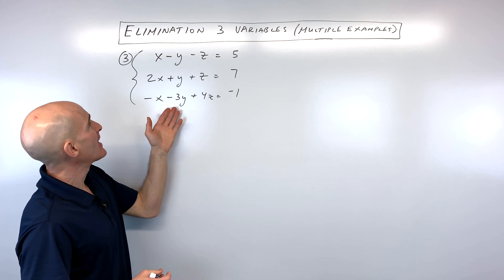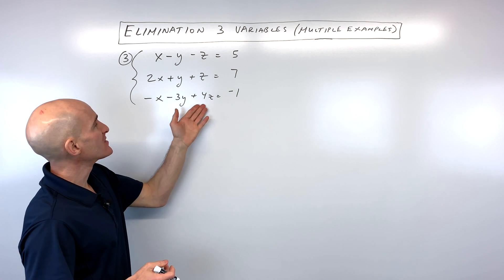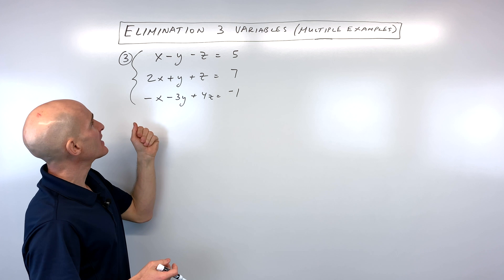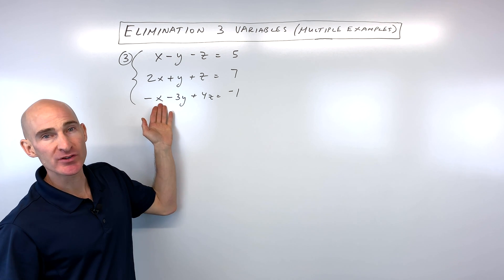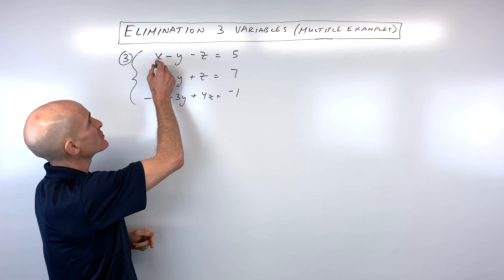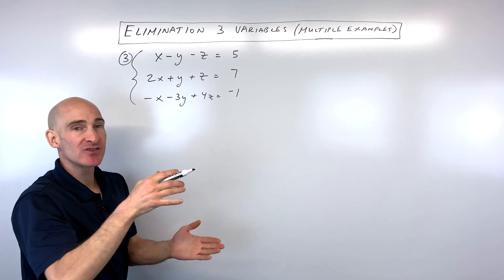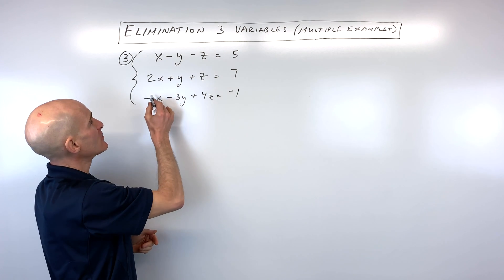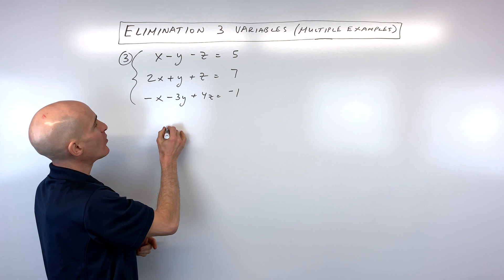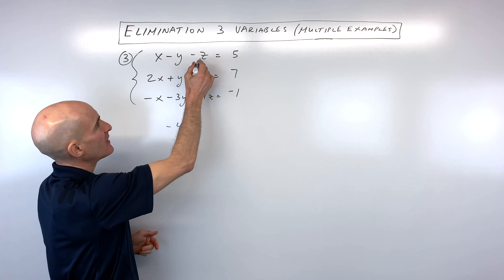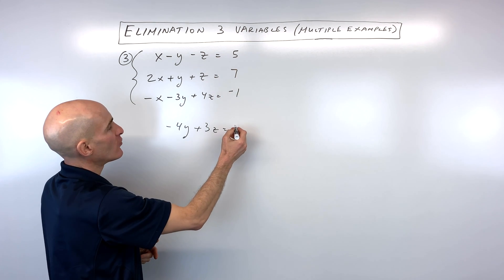The first thing to do is analyze which variable to eliminate — the x's, y's, or z's. It looks like any one is about the same, but we'll eliminate the x's first. I'll combine the first and third equations because x plus negative x will cancel. So x plus negative 1x gives 0, negative y plus negative 3y is negative 4y, negative z plus 4z is 3z, and 5 plus negative 1 is 4.